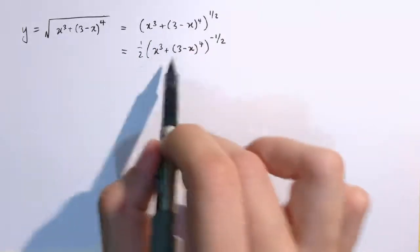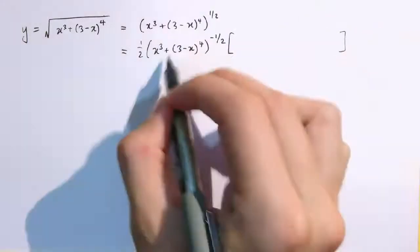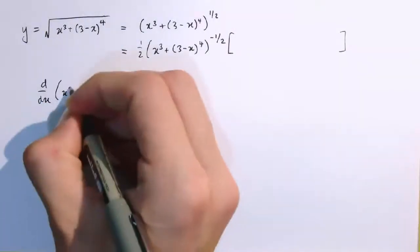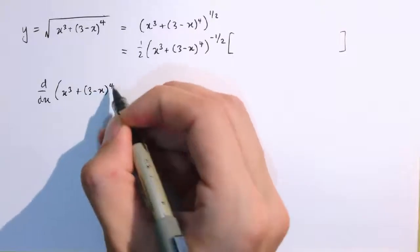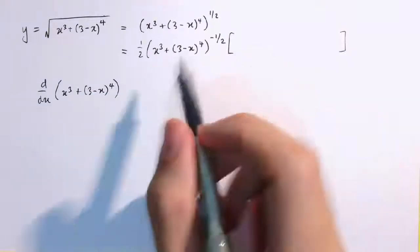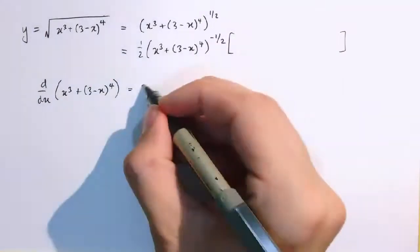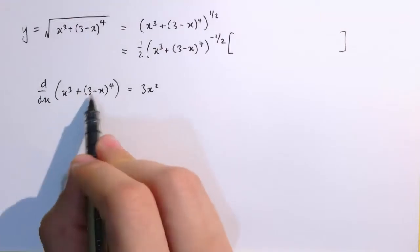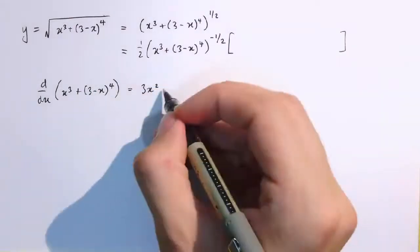Using the chain rule, we need to multiply by the derivative of this inside function here. So we need to know what d by dx of x cubed plus 3 minus x to the 4 is, and that's going to go in here. Now to differentiate this, x cubed becomes 3x squared, but now I've got to use the chain rule again to differentiate this part here.